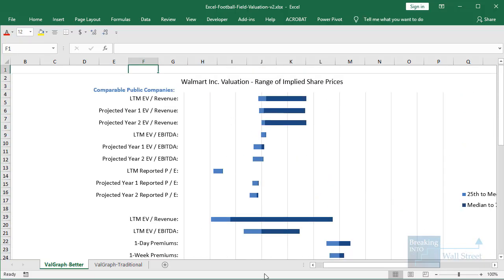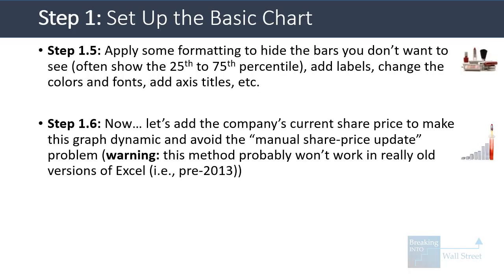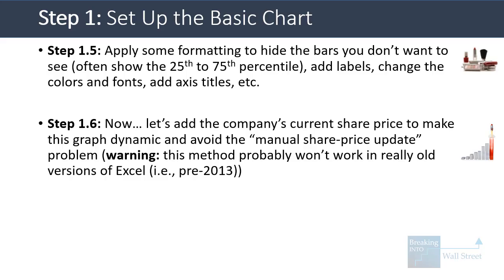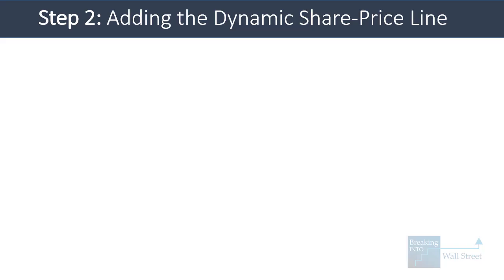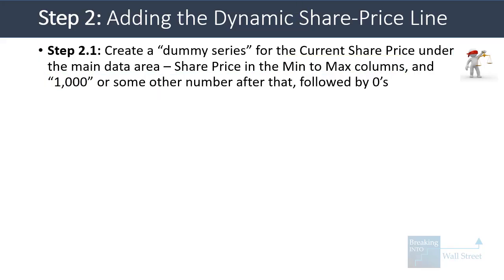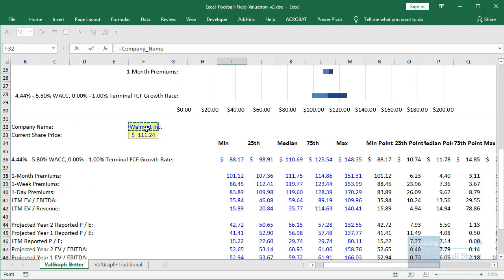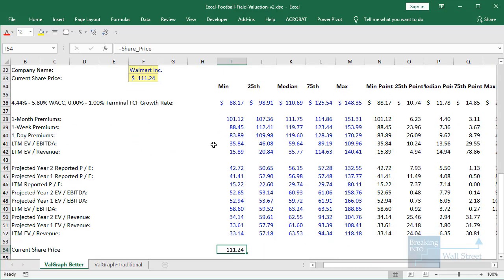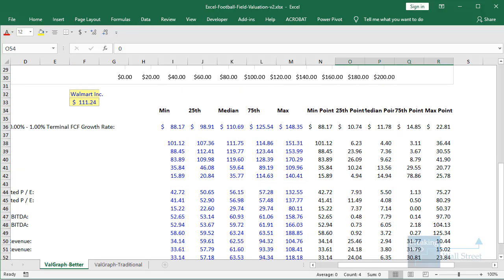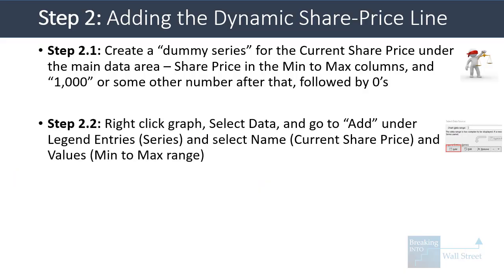So believe it or not, this is actually the easy part. Let's now go into step two and add the company's current share price to the graph to make it dynamic and avoid the issue of having to manually change the line and update the share price whenever it changes. I'll warn you in advance that if you're using a much older version of Excel, such as anything before Excel 2013, this is probably not going to work. So step two: adding the dynamic share price line. We have to start by creating a dummy series for the current share price under the main data area. We're going to do this in the min-to-max columns, then enter a thousand and then zeros after that in the other columns. So we'll link to Walmart's current share price, and then just enter some dummy values — a thousand and then zero after that.